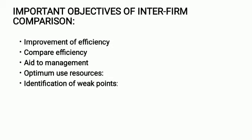Interfirm Comparison provides aid to management in enforcing and reviewing budgetary control and standard costing. The fourth objective is optimum use of resources — Interfirm Comparison helps to prepare a comprehensive and detailed plan for firms or units to obtain optimum use of human and material resources. The last objective is identification of weak points — the main objective of Interfirm Comparison is the improvement of efficiency and identification of weak points.